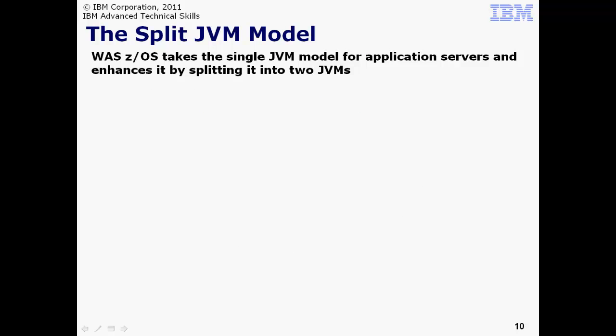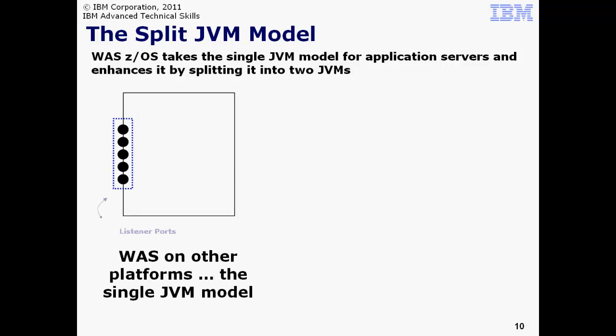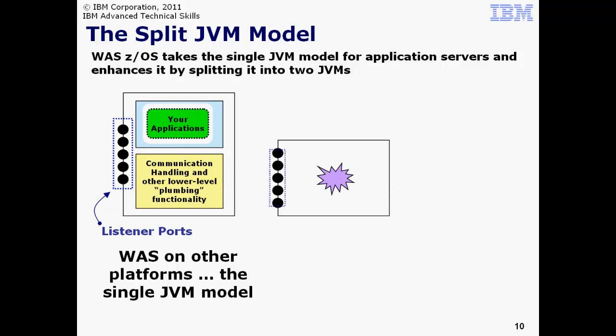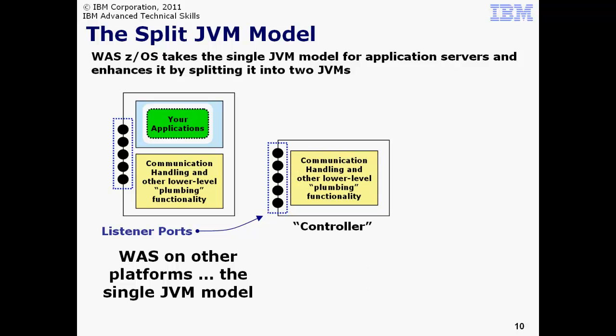Now we're ready to look more closely at the split JVM model. We start by painting a picture of the single JVM Application Server model used on the other platforms supported by WAS. In that model, the listener ports, the lower level IBM plumbing code, and the open standard API support are all hosted within the same environment, be that a Unix process or a Windows service. Your application is then added to this. In WAS z/OS, the lower level plumbing code as well as the listener ports are hosted within their own address space and JVM environment. This we call the controller or the controller region. Some abbreviate that and call it simply the CR.